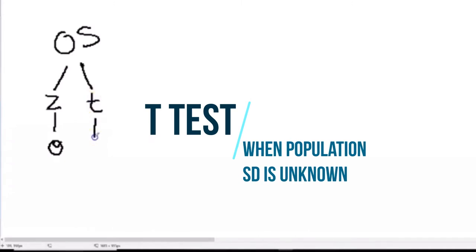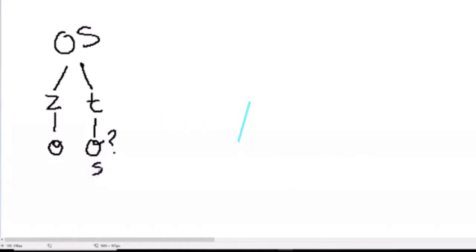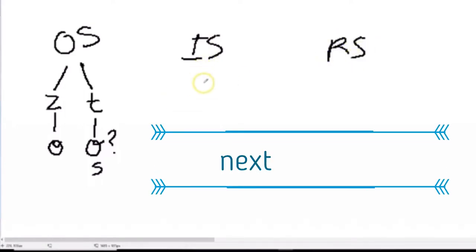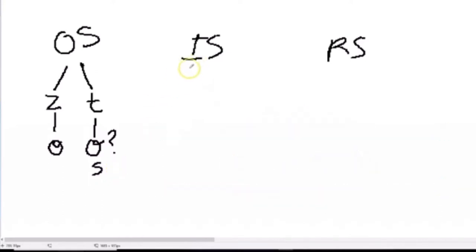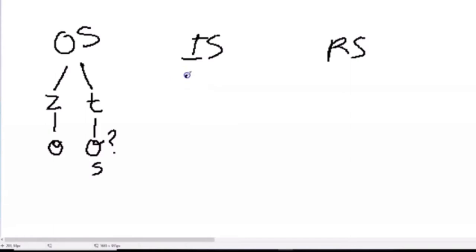You have to do a t-test, and that's what we're going to talk about today. This is when sigma is unknown, so you have to estimate it with a sample and use a sample standard deviation. There are also additional extensions of the t-test: the independent samples and the related samples t-tests, which are cases where instead of one group against an expected value, you're comparing two groups against one another.